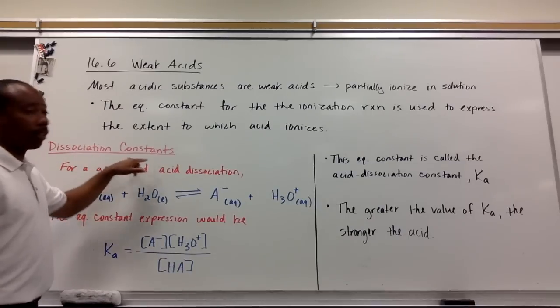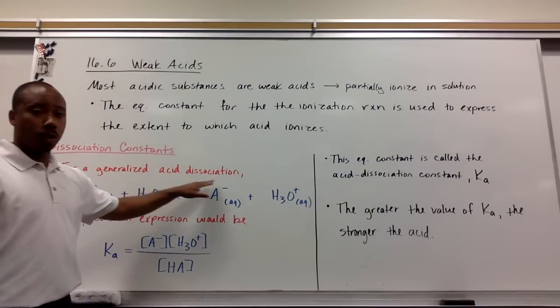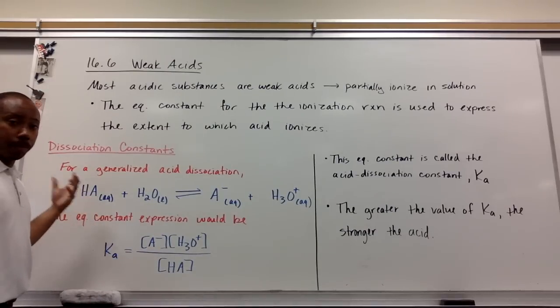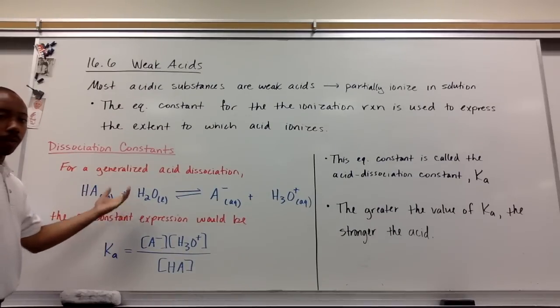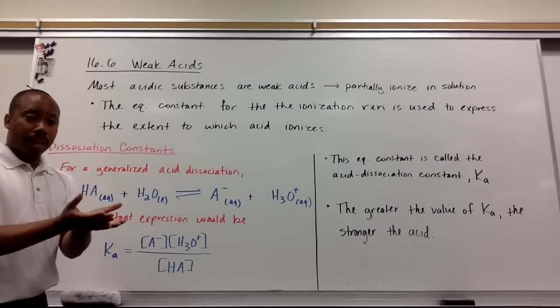So let's talk about these K values. They're called dissociation constants. If we take a generalized acid dissociation, some acid we'll call it HA. A is for acid. The H means it's a proton that could be donated. So a proton with an acid reacting with water.